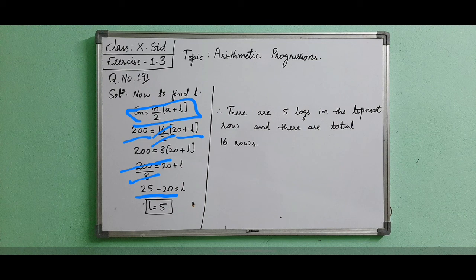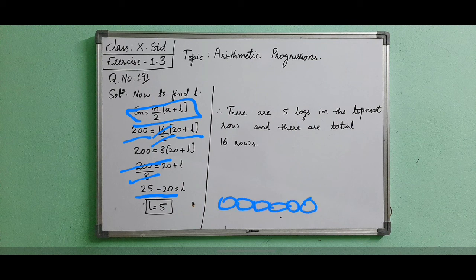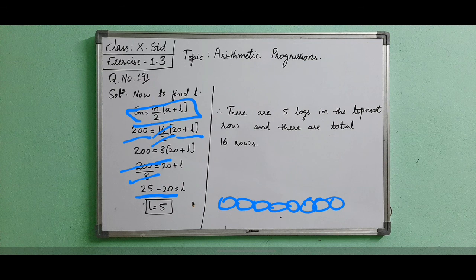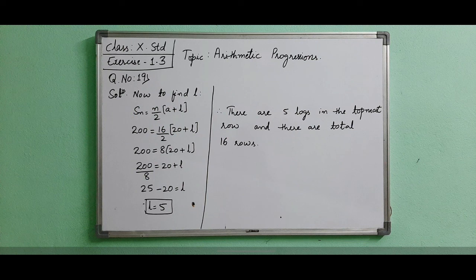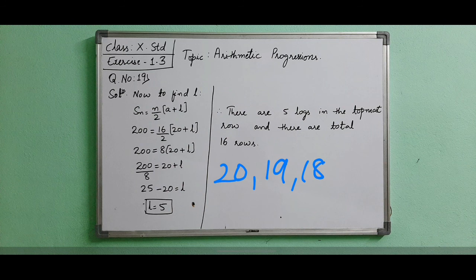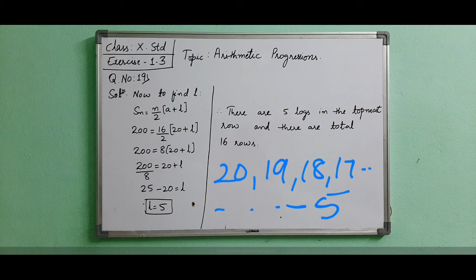What it means in this question? At the beginning, if it is having 20 logs and if we are reducing one by one, after 20 it will be 19, it will be 18, 17. If you are reducing like this, it will come up to 5. So where we are getting 5 logs, they will become the sum equal to 200.